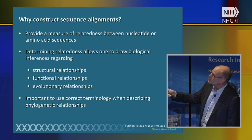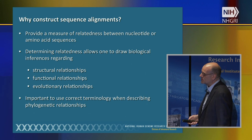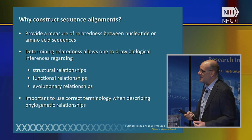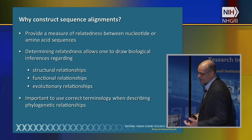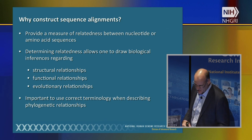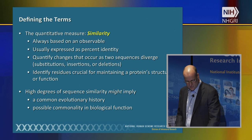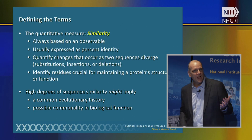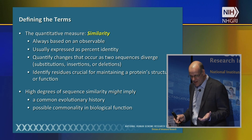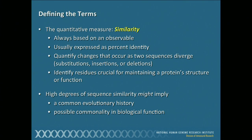Alignments allow us to draw biological inferences regarding structural, functional, or evolutionary relationships. Because of that, it's really important to use the correct terminology when we talk about these phylogenetic relationships. If you imagine that you have two sequences, A and B, and align them, the easiest way to convey how related they are is to simply count the number of matches and mismatches between those two sequences. When you do that, you have a quantitative measure called similarity.